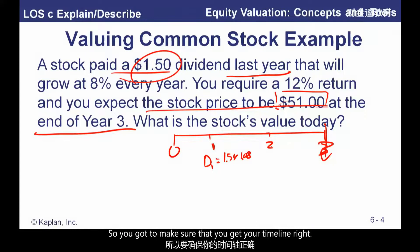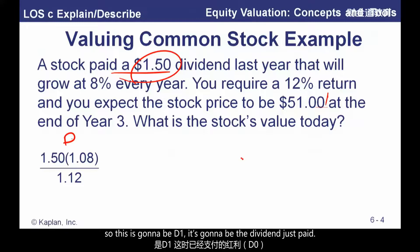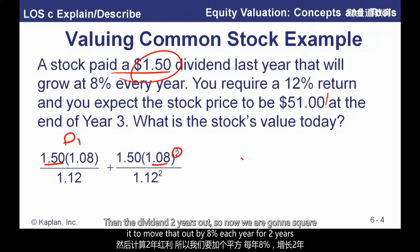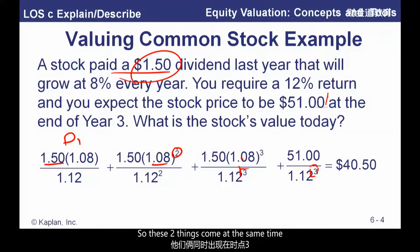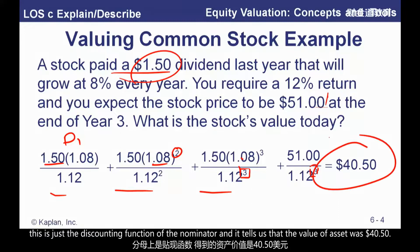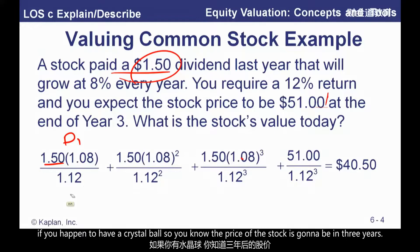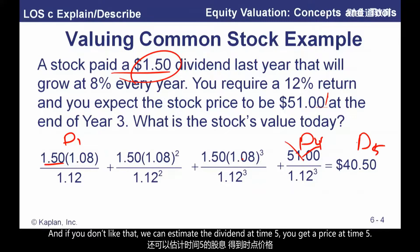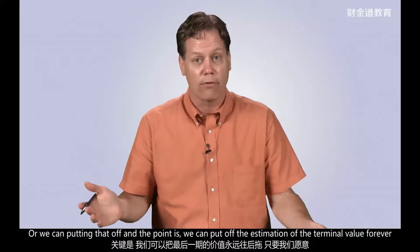The dividend at time one — D1 — is going to be the dividend just paid grown out for one year, which is approximately $1.62. Then dividend two years out, moving it forward at 8% each year for two years. The dividend at time three and the $51 also at time three come at the same time. This is just the discounting function in the denominator, and it tells us the value of the asset was $40.50. If you're thinking you need a crystal ball to know what the price will be in three years, we could instead estimate D4 and get a price at time four, and so on — ultimately getting back to the idea that the value of any asset is the discounted value of its future cash flows.